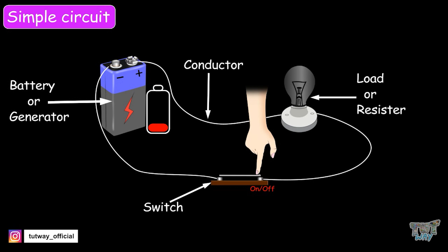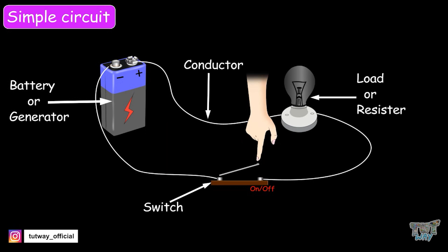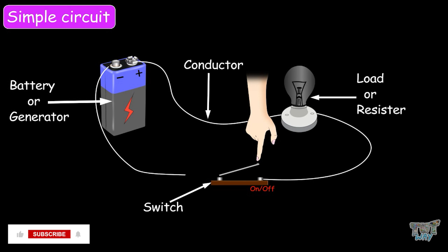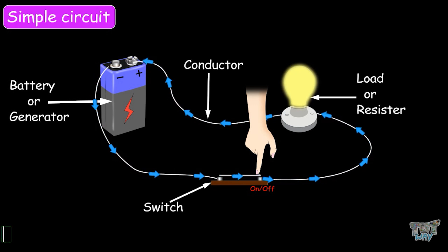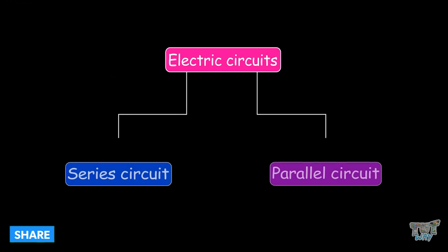Whereas when the switch is off, or if a wire is broken, the circuit is incomplete. The current cannot flow through an open circuit; the current only flows when the circuit is closed. When the current flows, the electric bulb starts glowing. There are two types of electric circuits: series circuits and parallel circuits.